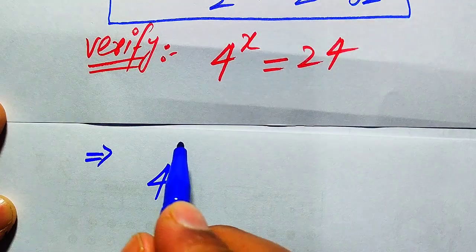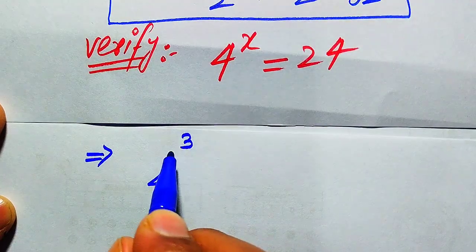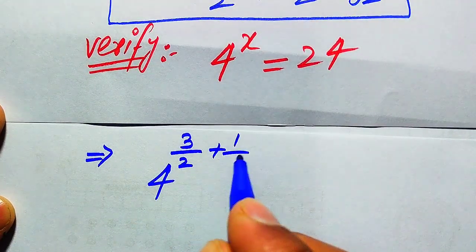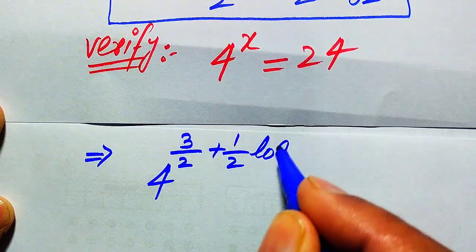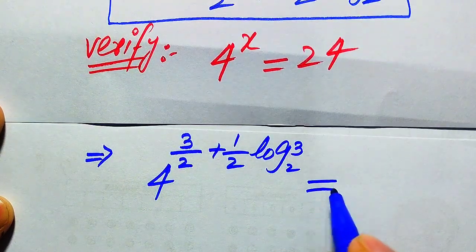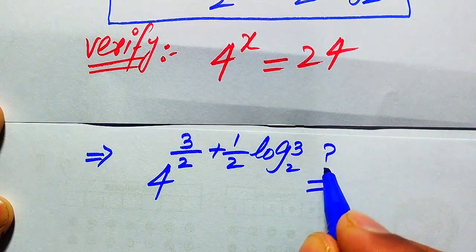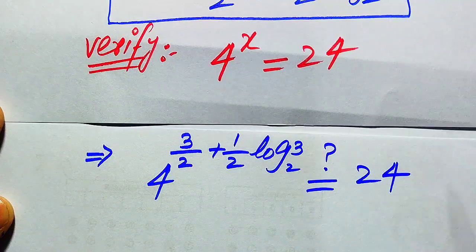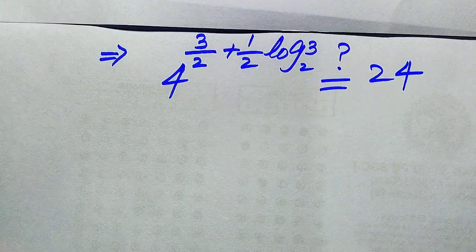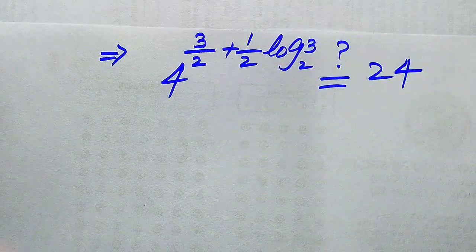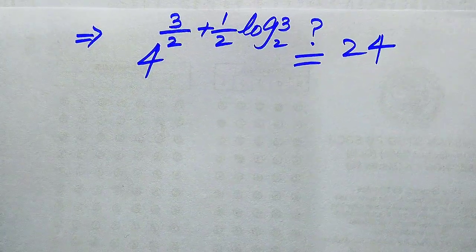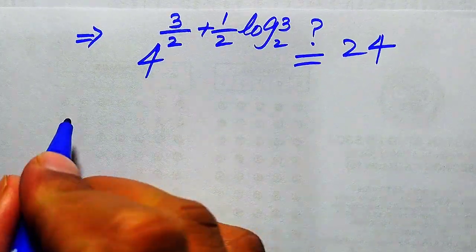When we put the above value of x into the left-hand side, it is written as 4 to the power of 3 over 2 plus 1 over 2 times log 3 with base 2. We check whether this equals 24 or not, meaning we need to do some working on the left-hand side to verify both sides are equal.